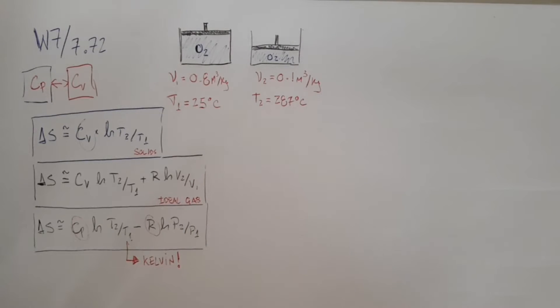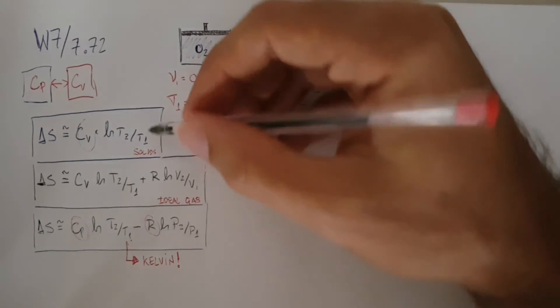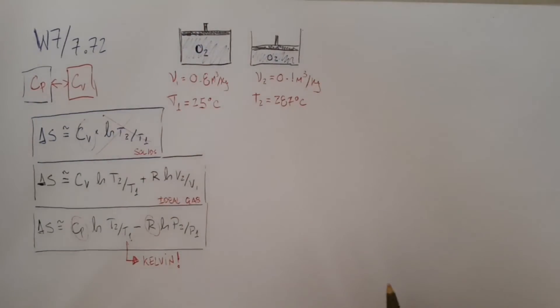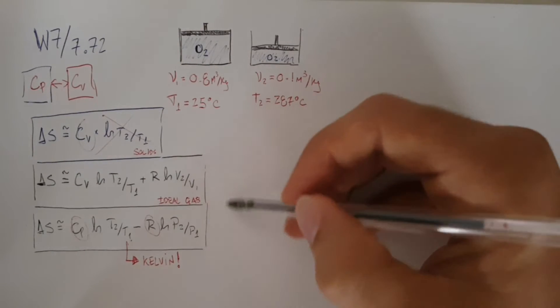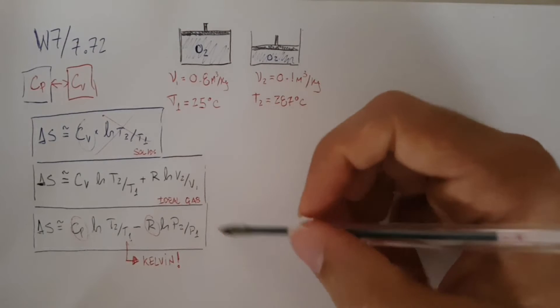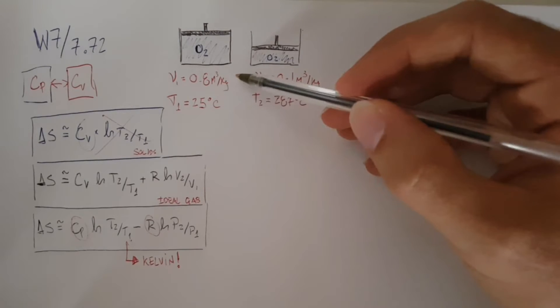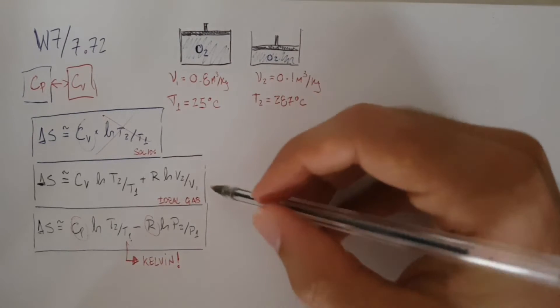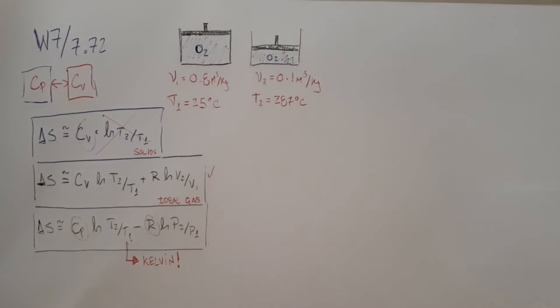We're being asked what is the delta S. We have these three options. We're obviously going to eliminate the solid equation because it's not a solid. Then we can use either of these equations. Because we do have a relationship with the volume, that's what we were given in the beginning, we're going to opt for this one which relates to volume.